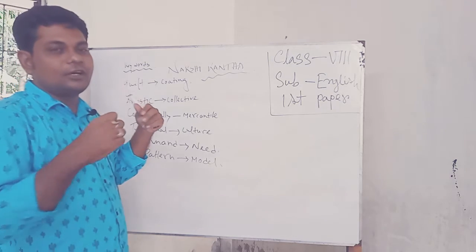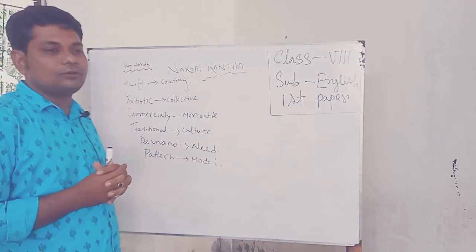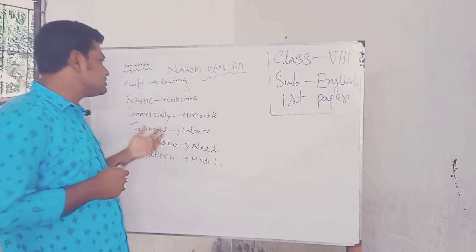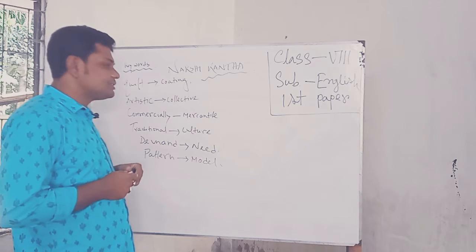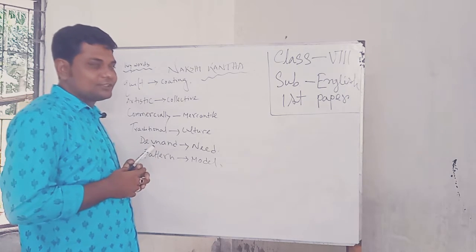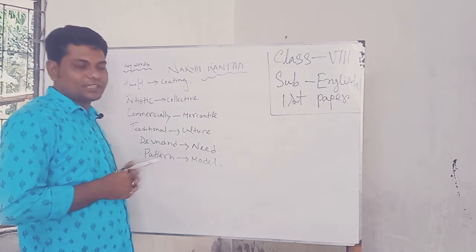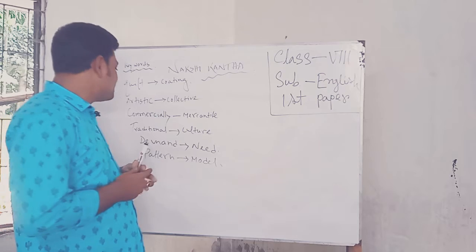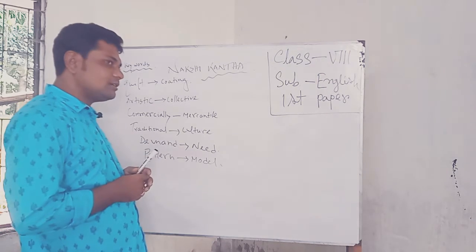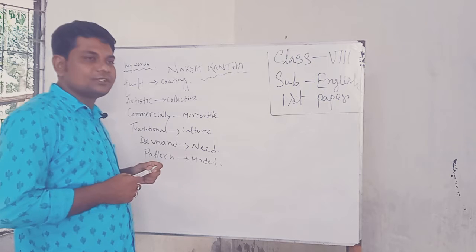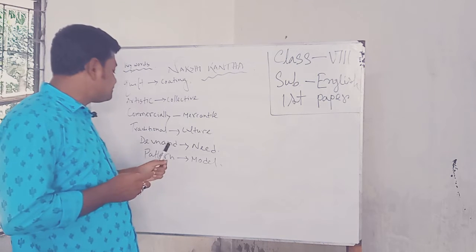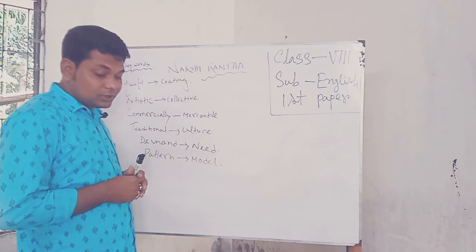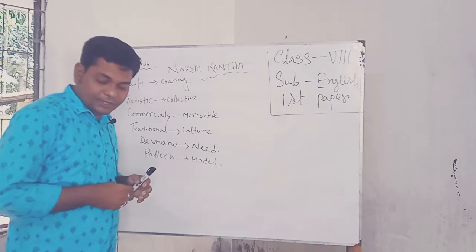The first word is 'quilt,' which means a kind of thick covering or thick dress. Next word is 'artistic,' which means collective. Next word is 'commercial,' which means related to market or business. 'Traditional' means culture. 'Demand' means need, and 'pattern' means model.